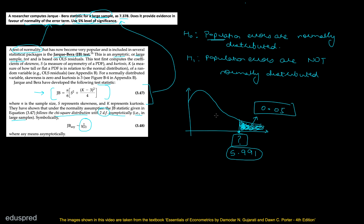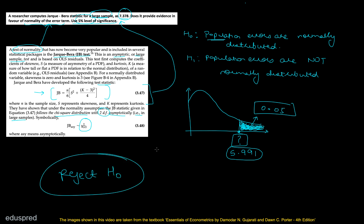Now the answer is quite straightforward. The critical value is 5.991 and the test statistic is 7.378, meaning the test statistic falls to the right of the critical value in the rejection region. So we reject the null hypothesis, because the calculated value is greater than the critical value. That means the population errors are not normally distributed. That's it for this part — let's move to the next part.